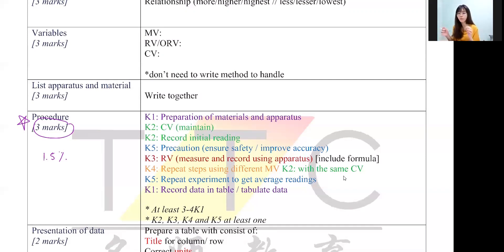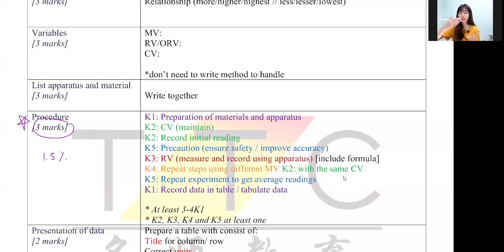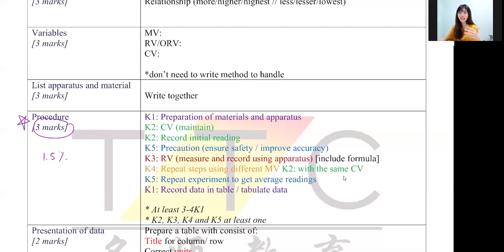In procedure, the marker looks for 5K: K1, K2, K3, K4, and K5. K1 is preparation of material and apparatus. K2 is how you maintain the constant variable. K3 is how you record and measure the responding variable. K4 is how you repeat the experiment with a different manipulated variable. K5 is repeating the experiment and stating the precaution. You must have at least three to four K-points, giving about seven or eight sentences.